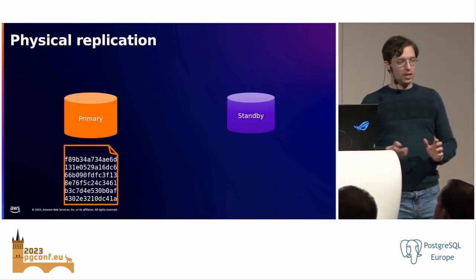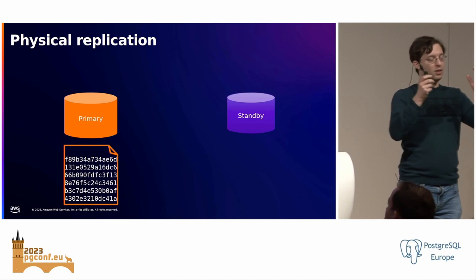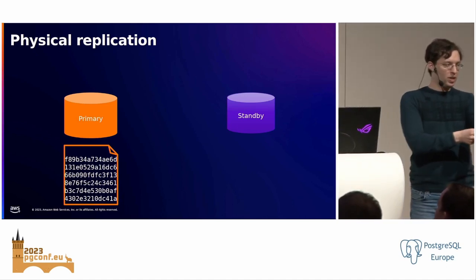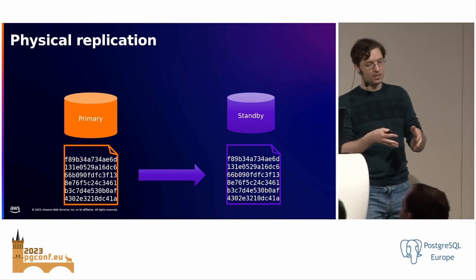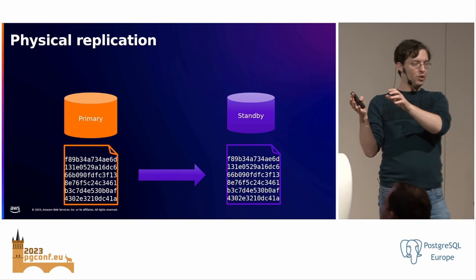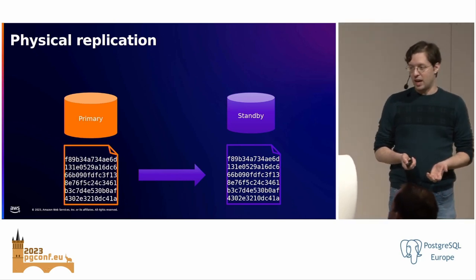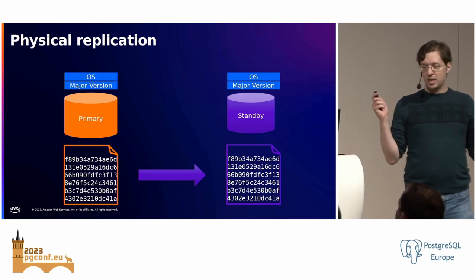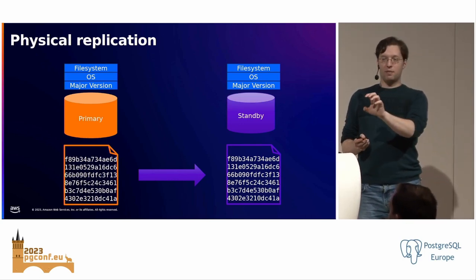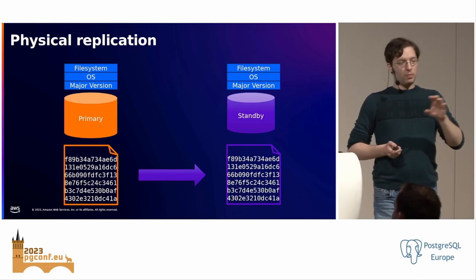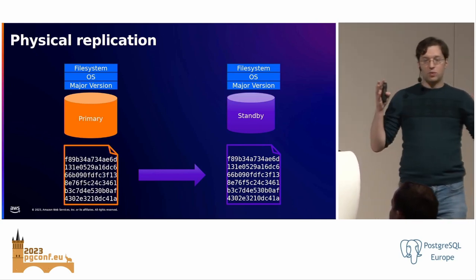To illustrate physical replication: Postgres is a byte-by-byte chunk of data. If I want to copy it from a primary — my read-write instance — to a standby, a read-only instance, I just take all those bytes and copy them over. Very simple, very efficient. But it's a little limiting because it truly is a byte-for-byte copy. Anything that can affect the output — your operating system, different major versions of Postgres, the file system — can affect the replication.